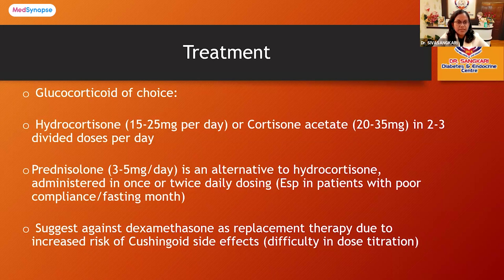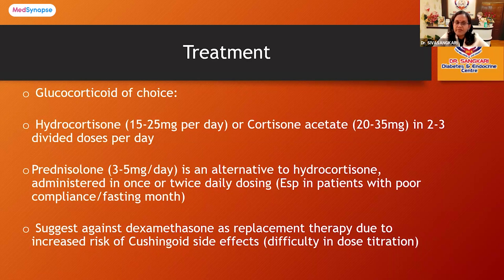In stable patients, the glucocorticoid of choice is hydrocortisone, given at approximately 10 to 15 milligrams per body surface area — about 15 to 25 milligrams per day — or cortisone acetate at 20 to 35 milligrams in two to three divided doses per day. Typically, we give 10 milligrams in the morning, 5 milligrams in the afternoon around 2 p.m., and another 5 milligrams in the evening around 6 p.m. The first dose is higher as it provides energy to start the day and is taken upon waking. An alternative is prednisolone at 3 to 5 milligrams per day.